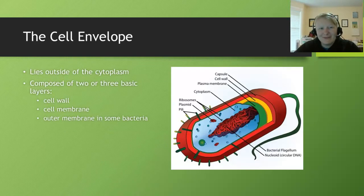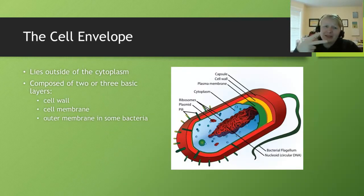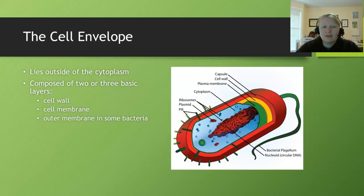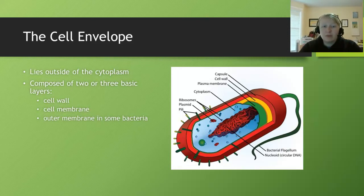So what is the cell envelope? We have three parts. Not all cells have all three — some just have two — but it's important to be familiar with them. We have the cell wall, the cell membrane, and the outer membrane. It goes cell membrane being the closest to the cytoplasm, cell wall in between, and then the outer membrane last.